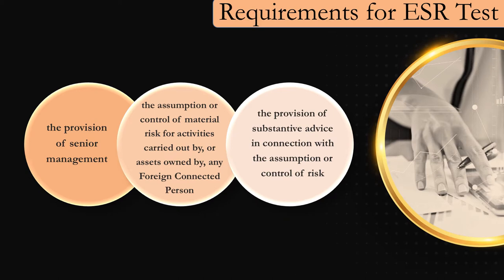Now let's look into the requirements for the economic substance test. A licensee is regarded as carrying on a headquarter business if they provide services to a foreign group company and through those services the licensee is taking responsibility for the overall success of the group or an important aspect of the overall group's performance. In order for a UAE business to be seen as having taken on that responsibility, the services provided must involve either: the provision of senior management, the control of material risks for activities carried out by the foreign companies, or substantive advice in relation to the assumption or control of such risks.